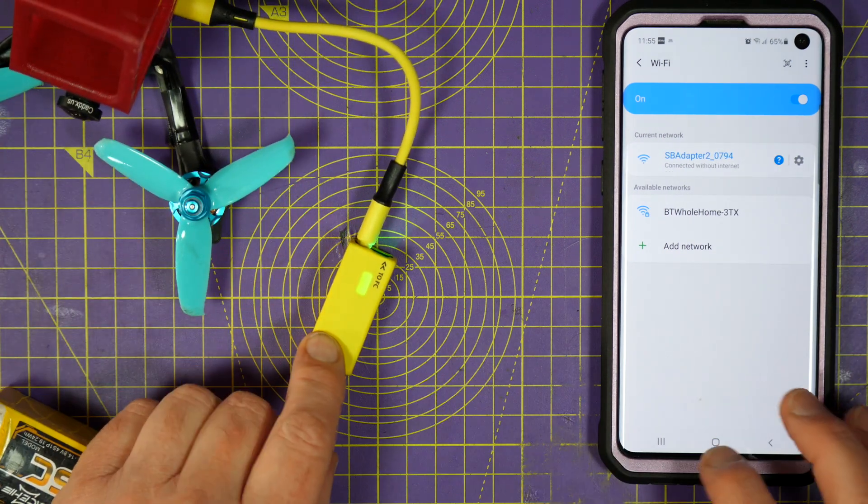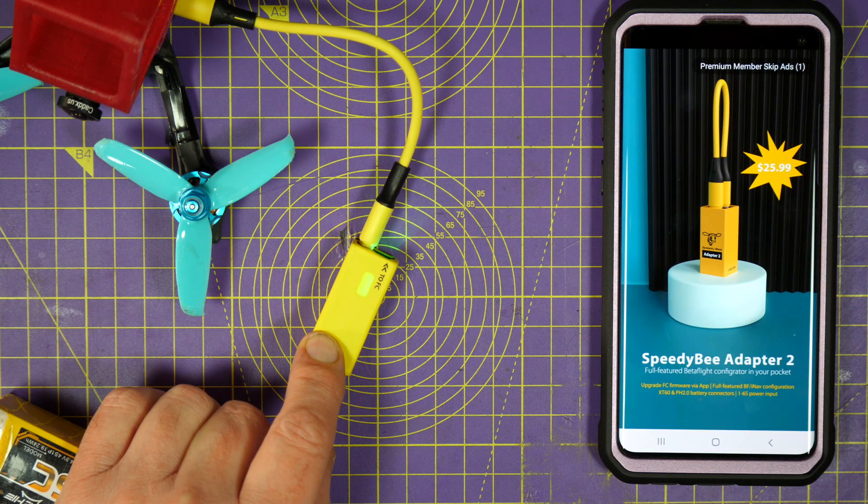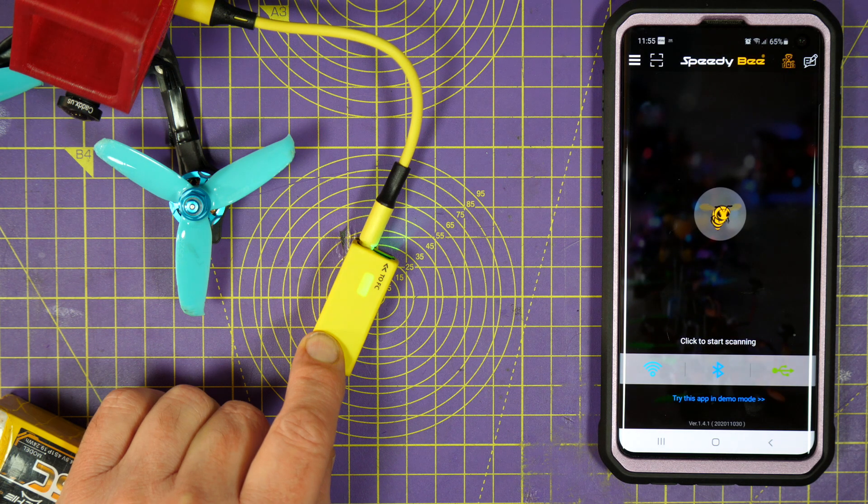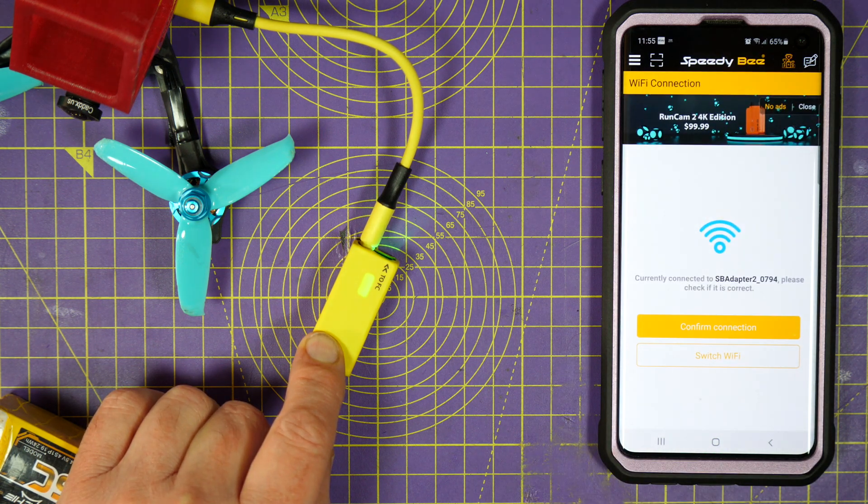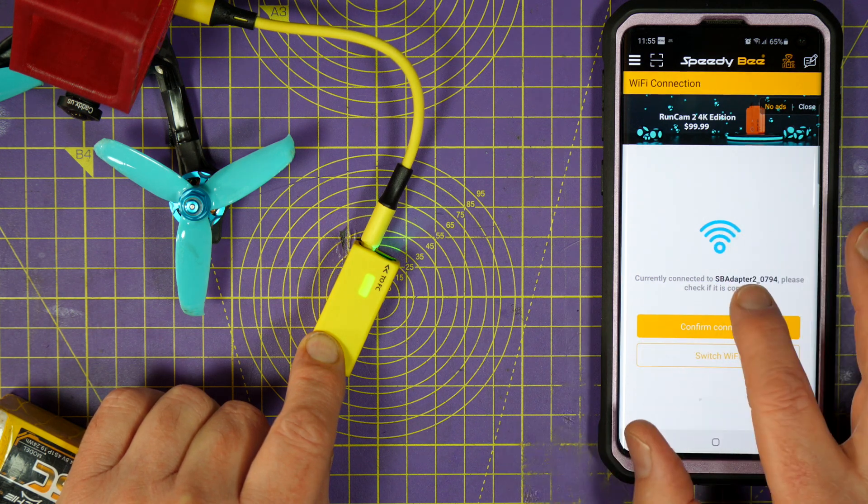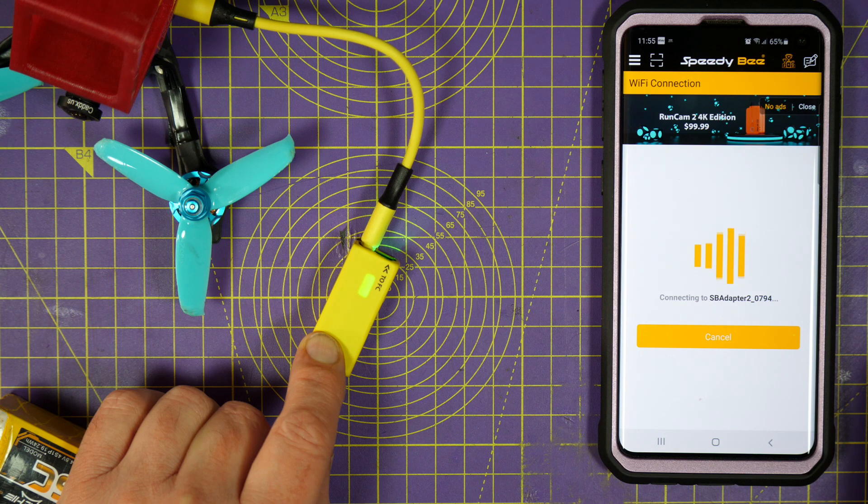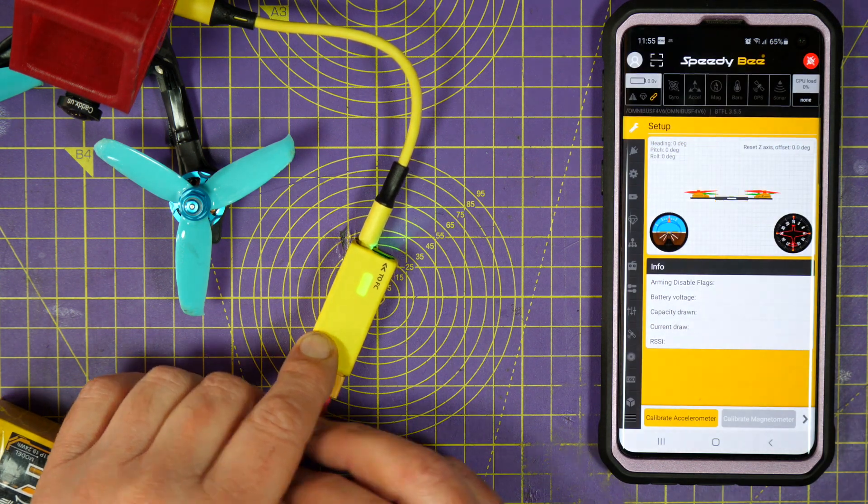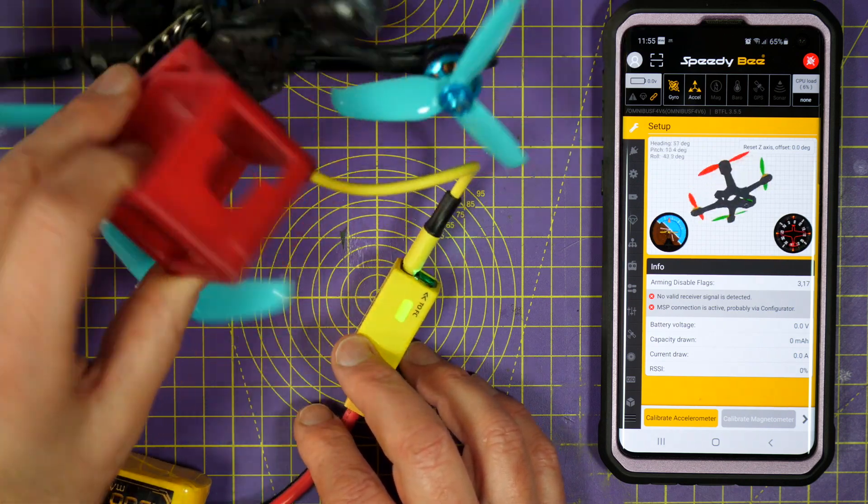Now, all you have to do is go back to your Speedy B app and click to start scanning. I hit the Wi-Fi button. It's actually found it there, which is good. Confirm. There we go. It really is incredibly simple.